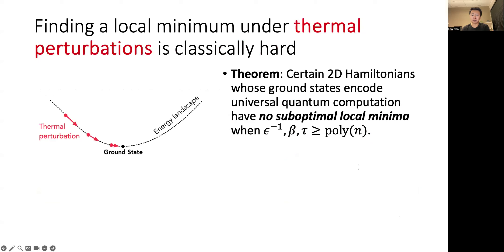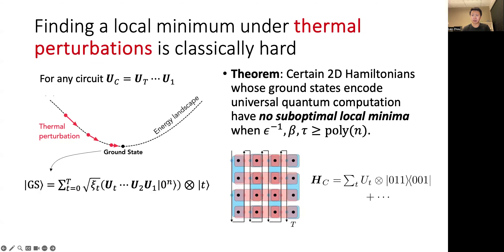Next, we will show that finding a local minimum under thermal perturbations is classically hard. We proved the following theorem: certain families of two-dimensional Hamiltonians whose ground states encode universal quantum computations have no suboptimal local minima for sufficiently large parameters. This implies that for these Hamiltonians, the energy landscape has a very nice bowl shape, and every state can flow to the unique local minimum, which is the ground state. These Hamiltonians are a modified version of the Kitayev circuit Hamiltonian, where for any quantum circuit U sub C, there is a corresponding geometrically local Hamiltonian H sub C in 2D, such that its ground state is a weighted superposition over all computational history of the quantum circuit. Hence, measuring observables in the unique local minimum of such a Hamiltonian is the same thing as measuring observables in the output state of the quantum circuit. Then, assuming the standard assumption that quantum circuits cannot be efficiently classically simulated, finding any local minimum of H sub C must be classically hard.